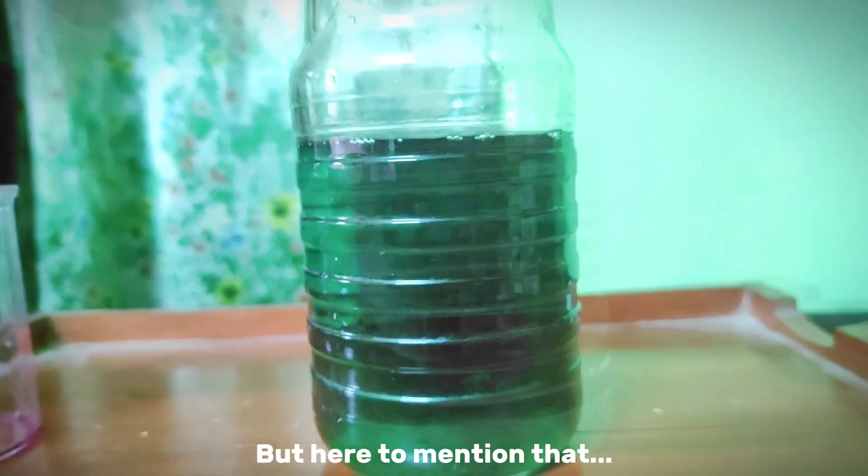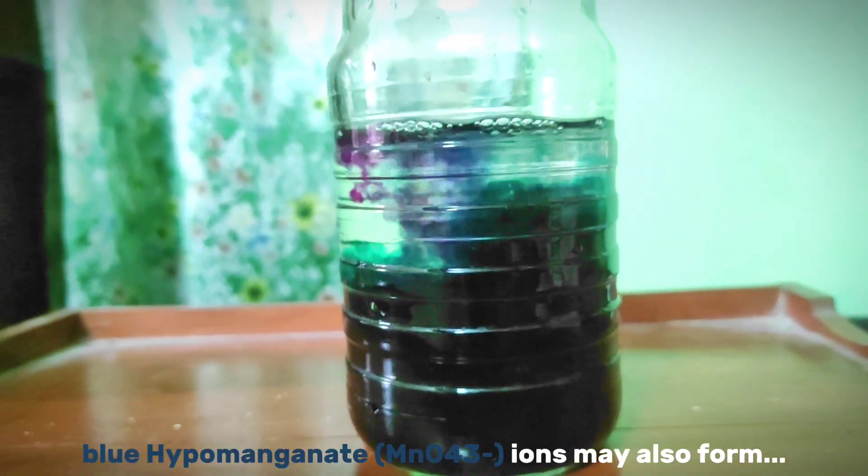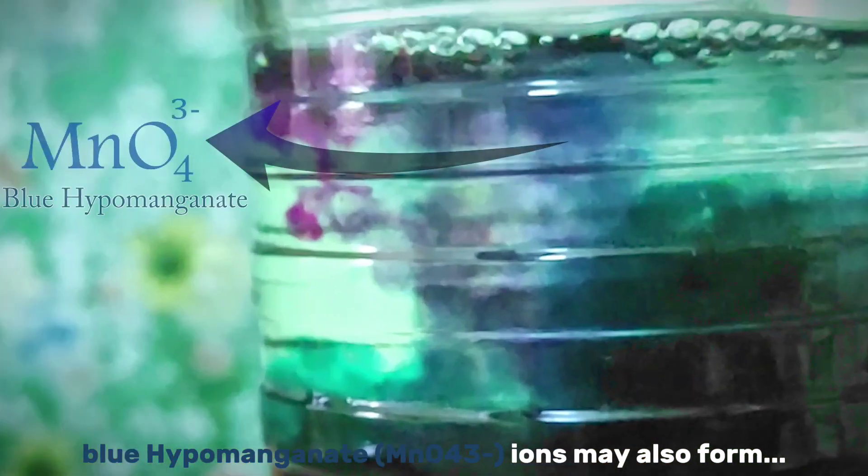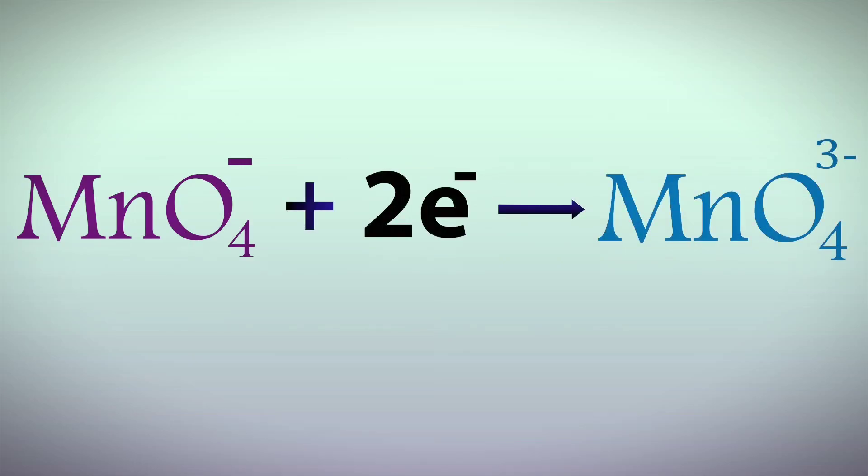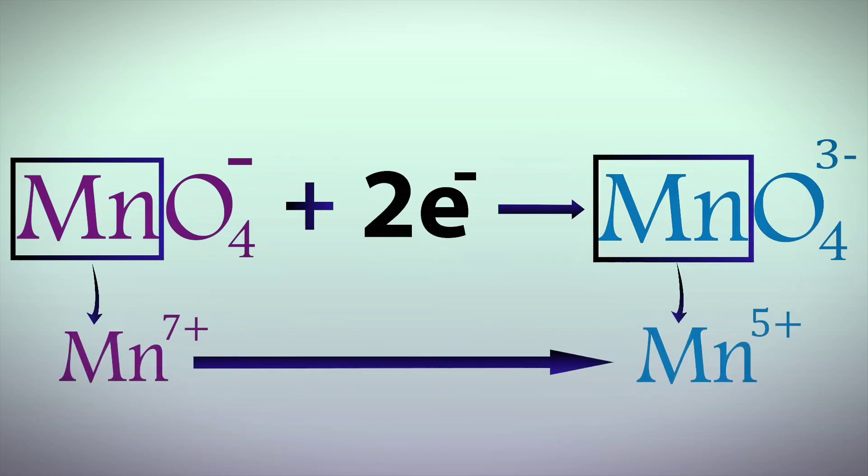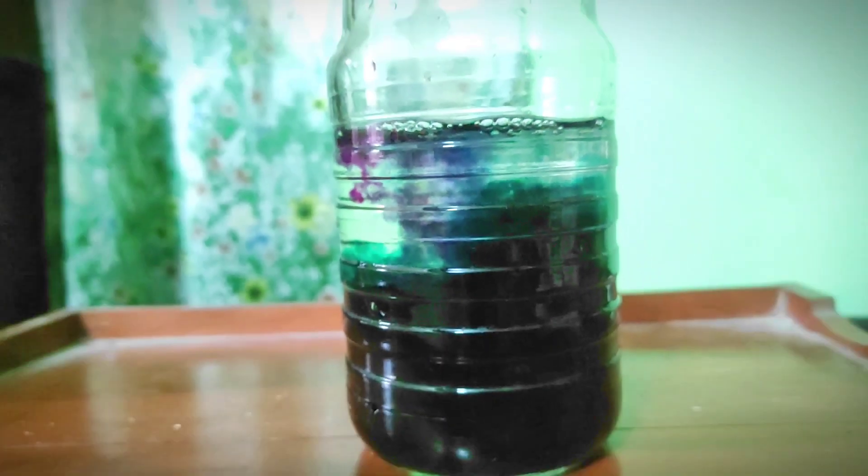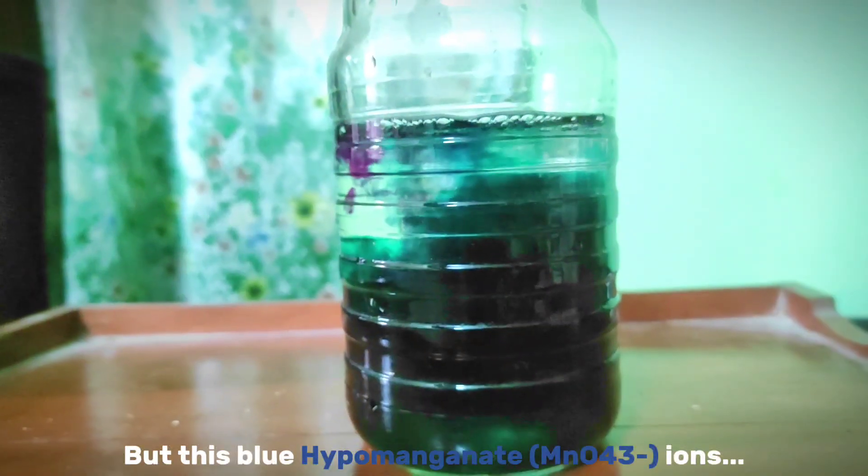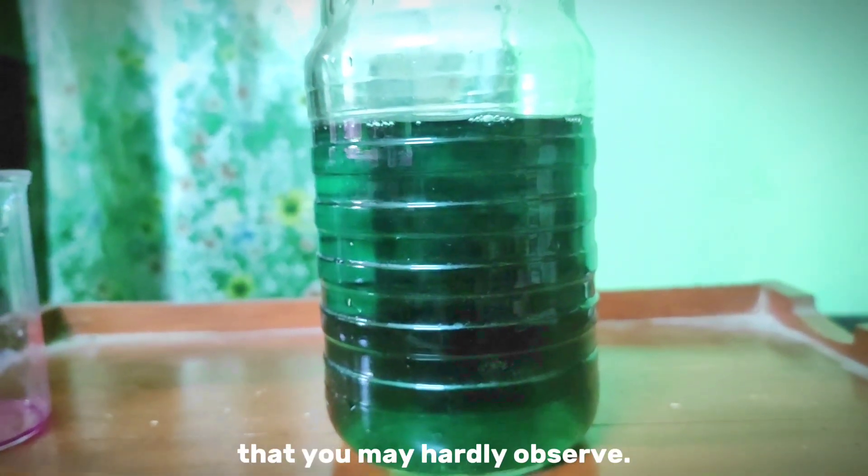But here to mention that before forming the green manganate ions, blue hypermanganate ions may also form as an intermediate. Part of permanganate is reduced to hypermanganate. The oxidation state of manganese changes from plus 7 to plus 5, and that gives the solution slightly a blue color. But these blue hypermanganate ions change to green manganate ions very quickly that you may hardly observe.